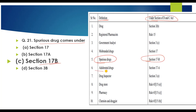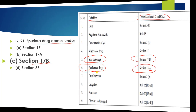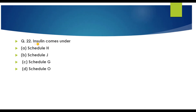Spurious drug is defined under Section 17B of the Drugs and Cosmetics Act. Adulterated drug is defined under Section 17A. Question number 22: Insulin comes under Schedule G. Schedule G is the list of substances required to be used under medical supervision.